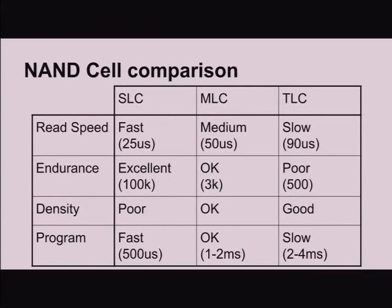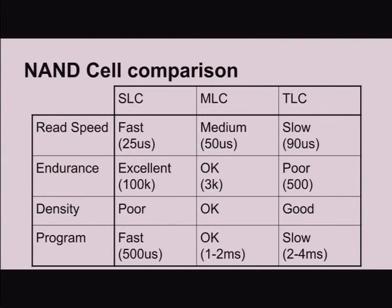I've summarized this in a table. Read speed for SLC is pretty fast, and it gets worse the more bits you put in the cell because you have to study it more closely. Endurance — the number of program/erase cycles — for SLC might be 10K to 100K cycles, which is almost forever. For MLC, maybe 3K to 5K depending on the technology. TLC is even worse. So SLC is really good for write-heavy workloads, while TLC is good when you need more storage density but don't write very much, since its write speed is slow but density is good.